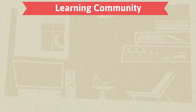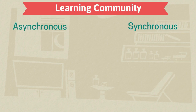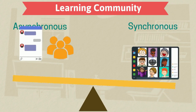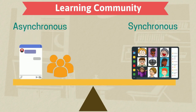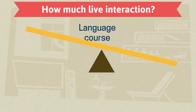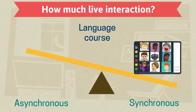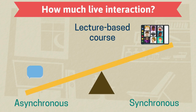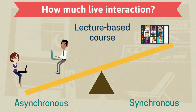Most weekly patterns will have a mix of asynchronous content and synchronous meetings. The specific mixture depends on the amount of live interaction the students need and what you want to do to build an online class community. For example, a language course may have three live meetings per week so students can practice with others, but a lecture-based course might only offer one optional live meeting because students use an online forum and group assignments to interact with each other.